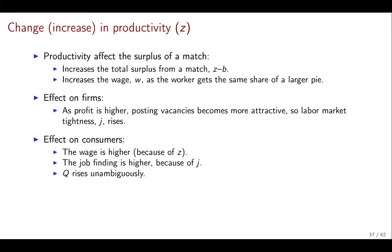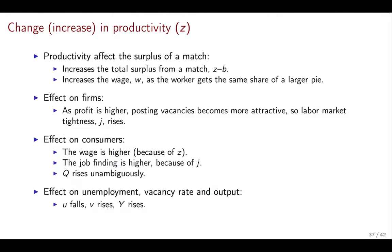Both of these changes are going to actually increase participation, so we know that Q is going to increase unambiguously. We know that unemployment has to fall because of the change in tightness, and the vacancy rate has to go up because of the change in tightness. Output is going to have to go up because you have more participation, a higher probability of finding a job, and higher productivity — so all three components of output are going to go up.